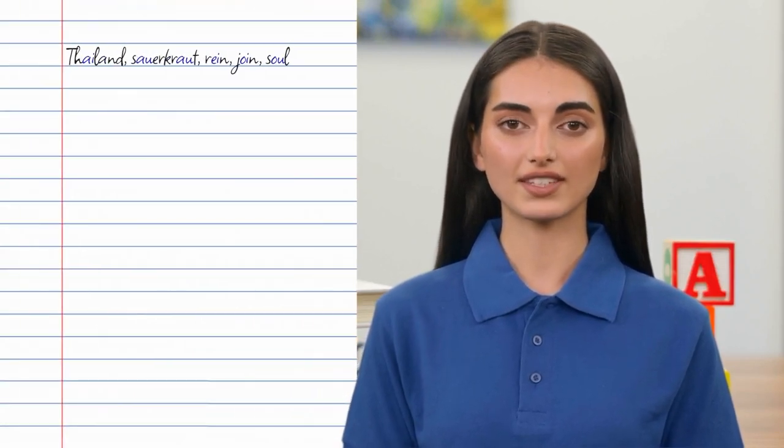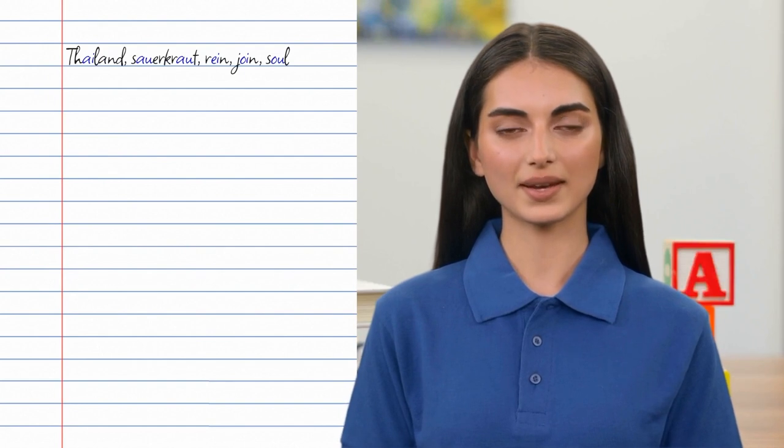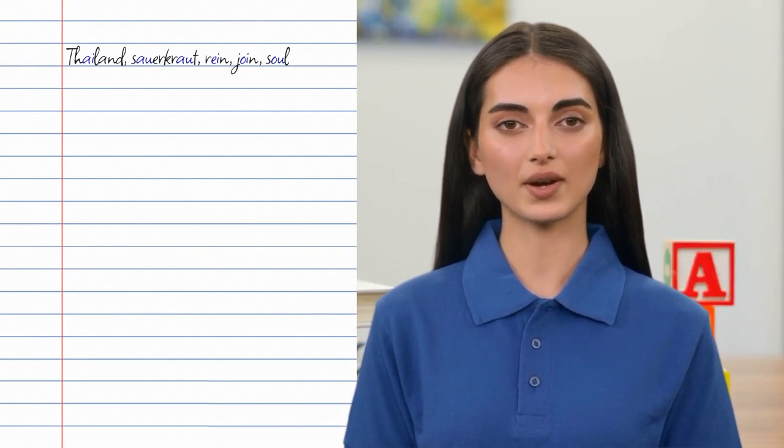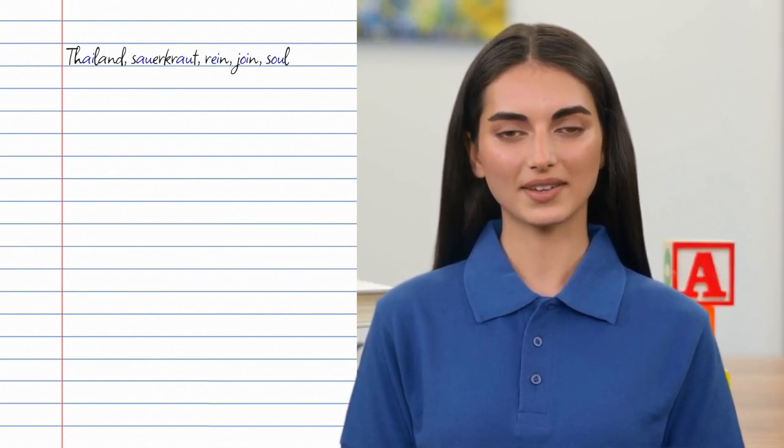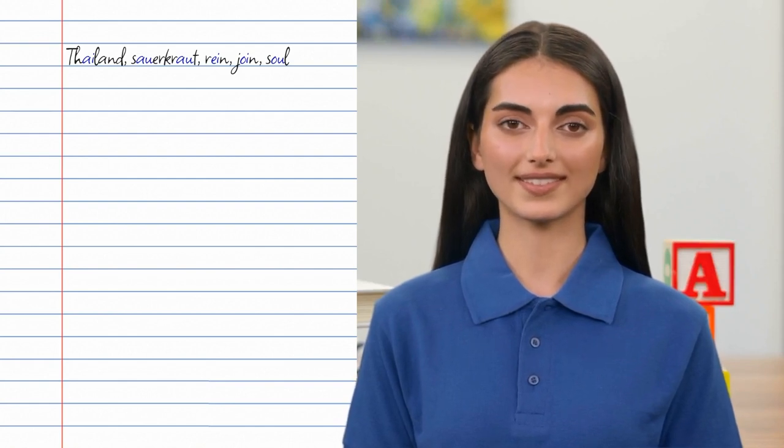Here are five traditionally spelled words in which the blue letter sequence makes the same sound that it does in RLS: Thailand, sauerkraut, rain, join, soul.